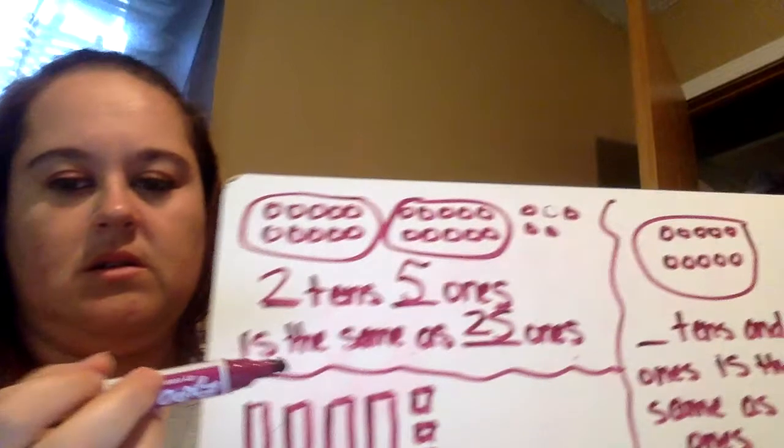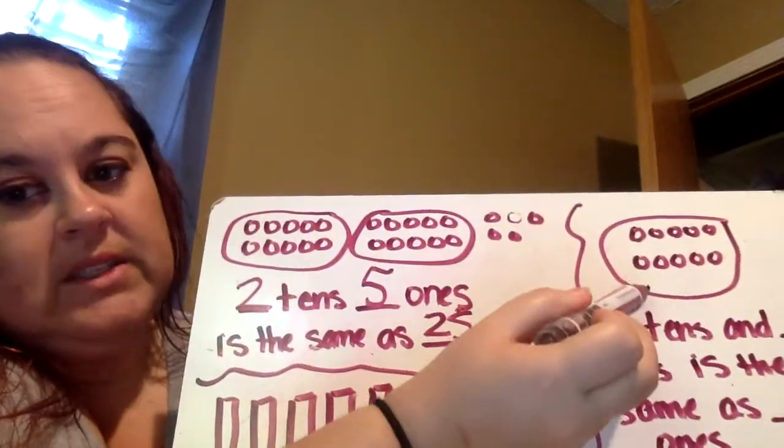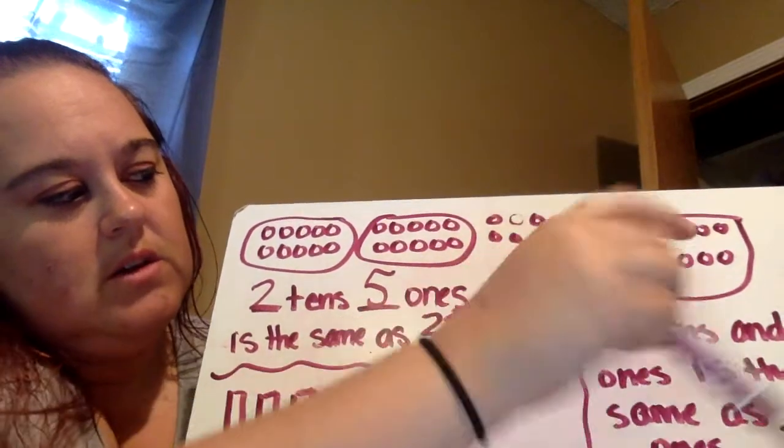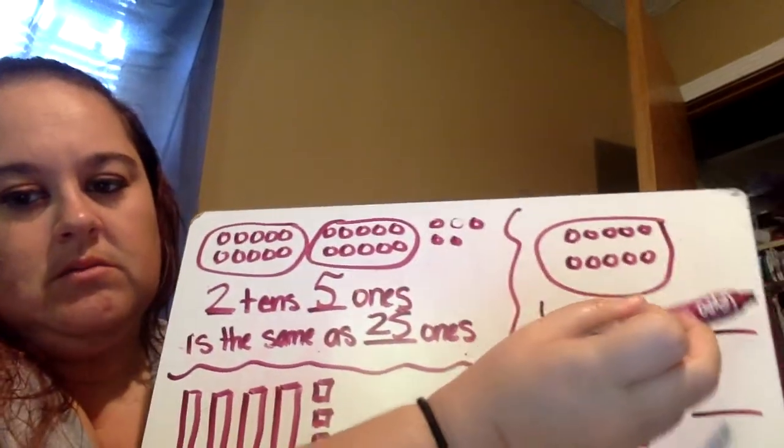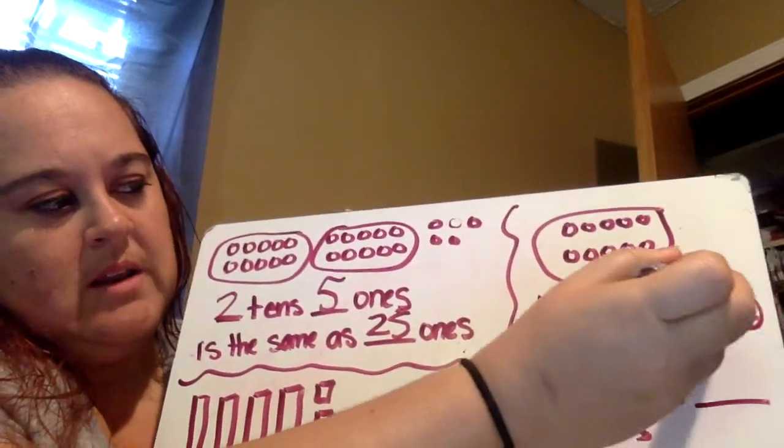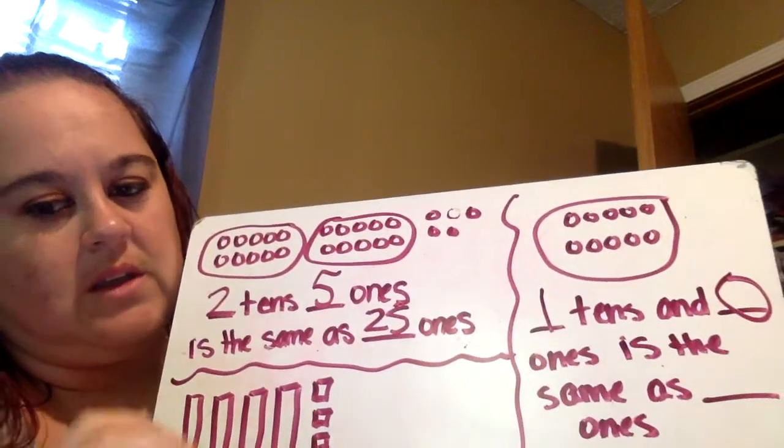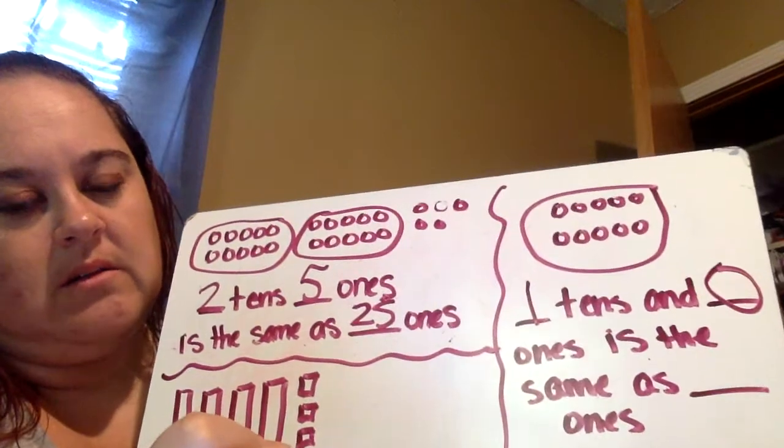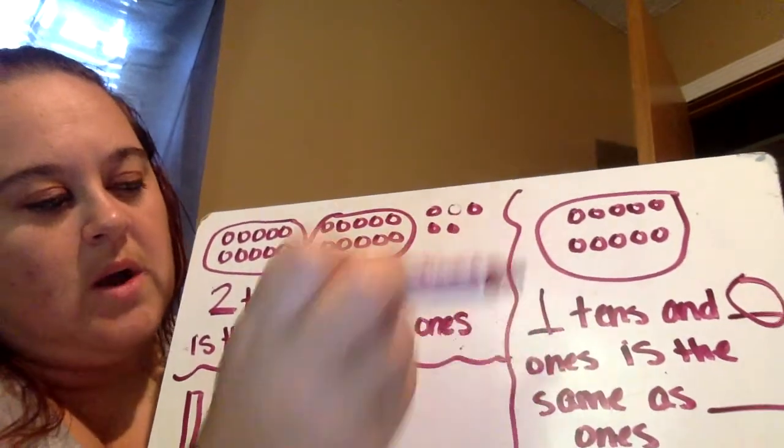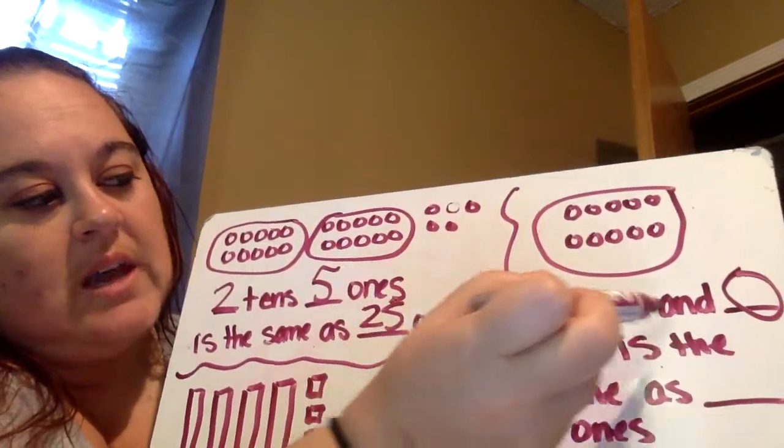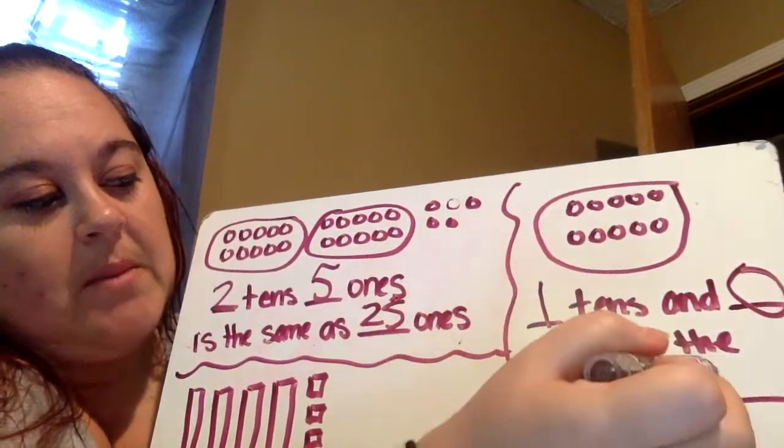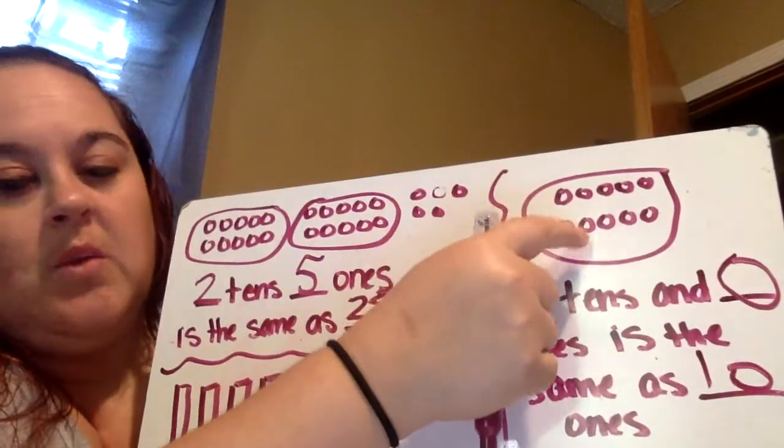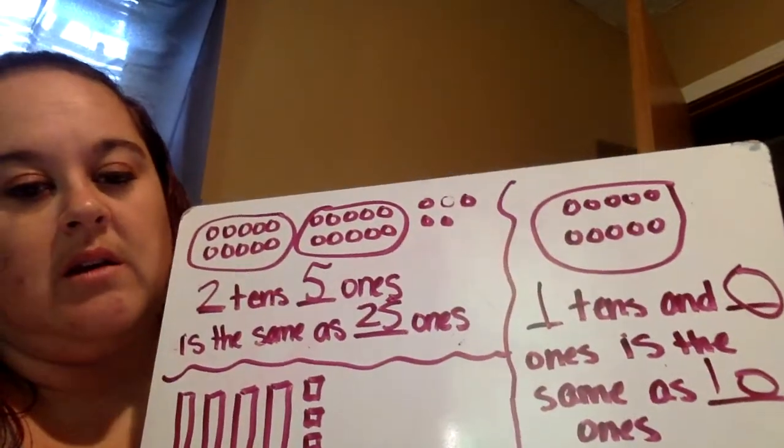So this is one set of ten. So we have one ten. Do we have any ones? Nope. No ones. So one ten and zero ones. How many ones are in that ten? There are ten ones in that ten. So one ten and zero ones is the same as ten ones. Because we have ten ones right there in that ten.